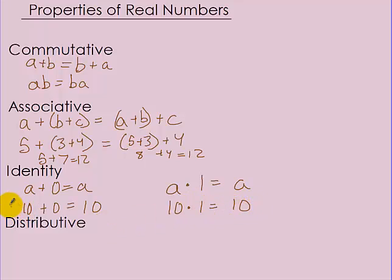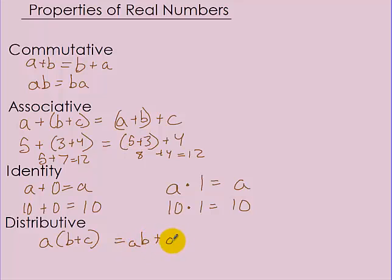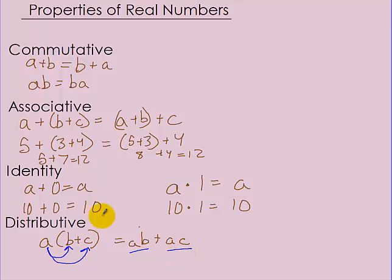The distributive property formula is: A times the quantity (B plus C) equals AB plus AC. What's happening is you're distributing this A to both B and C, so it becomes A times B plus A times C.